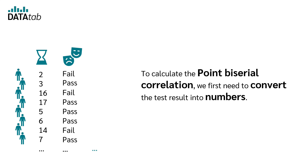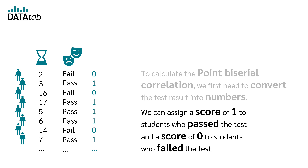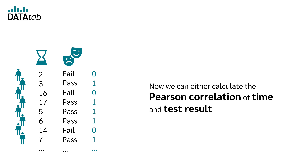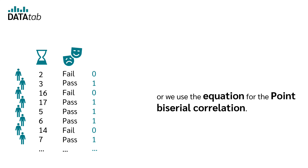To calculate the point-biserial correlation, we first need to convert the test result into numbers. We can assign a score of 1 to students who passed the test and a score of 0 to students who failed. Now we can either calculate the Pearson correlation of time and test result, or we use the equation for the point-biserial correlation.